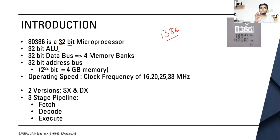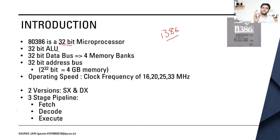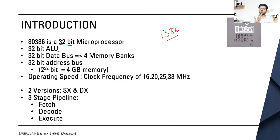When we have a 32-bit data bus and want to extract the whole address at once, one memory bank has 8 bits of address, which is 1 byte. So to have all 32 bits at the same time, we use 4 memory banks, each having 8 bits of information, giving a total of 32 bits. So it had a 32-bit address bus.